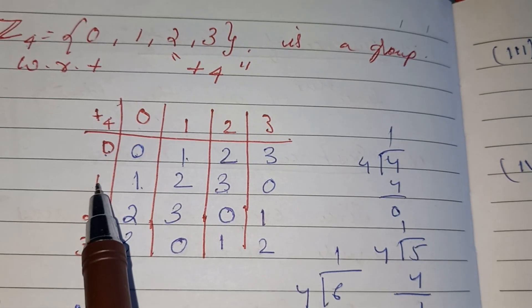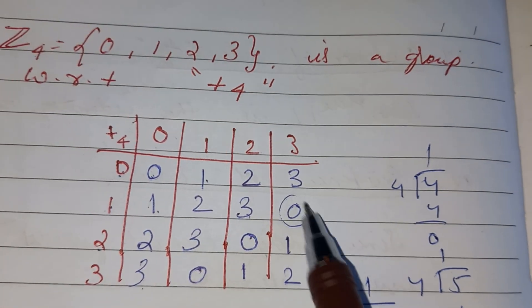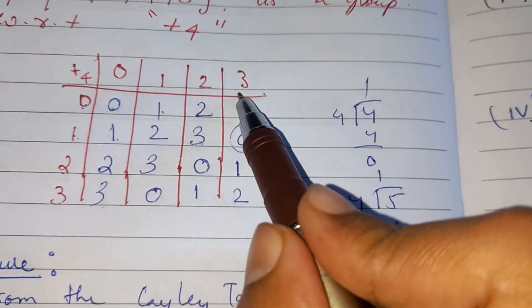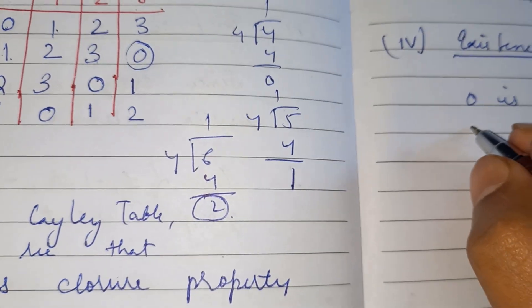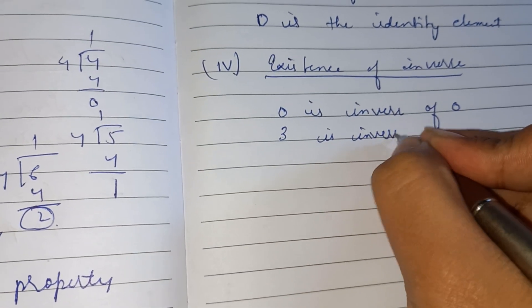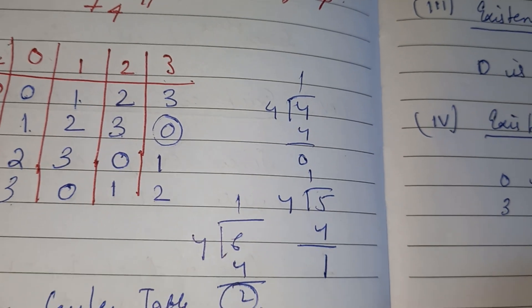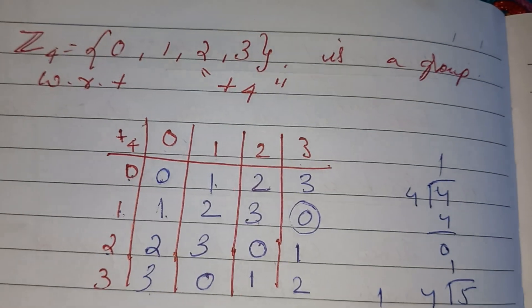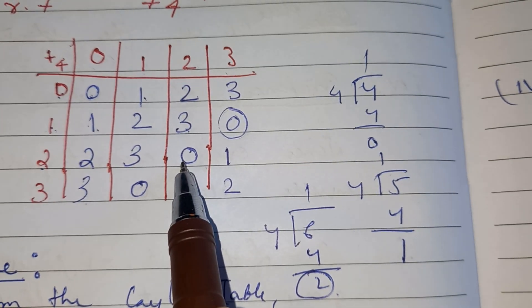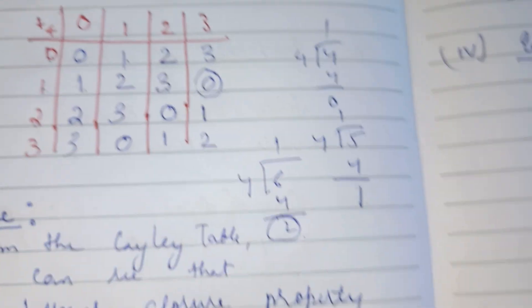Now we will check the existence of inverses. Since the additive identity element is 0, for the element 1 we notice that the inverse element is 3, and vice versa. Then for 2, the inverse element is 2 itself.